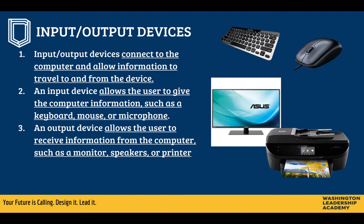Input/output devices connect to the computer and allow information to travel to and from the device. An input device is anything that allows the user to give the computer information — such as a keyboard, mouse, or microphone. A keyboard and mouse let you tell the computer what to do; a microphone gives the computer audio. An output device allows the user to receive information from the computer, such as a monitor, speakers, or a printer. The monitor shows you what's happening, the speakers let you hear it, and the printer lets you physically get things from the computer.